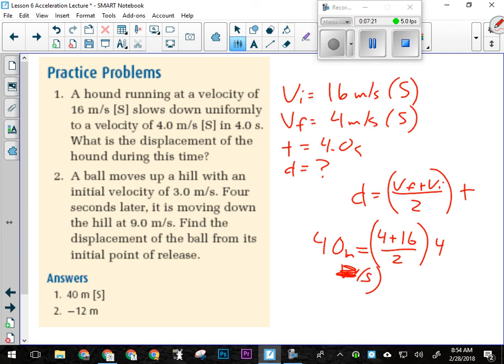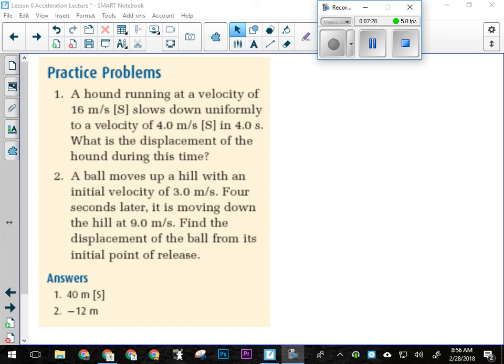Let's look at number 2. In number 2, vectors are important. Because in this question, the ball is initially moving up the hill, but later it's moving down the hill. So one of our velocities is positive and the other is negative. And if you don't reflect that in your math, you won't get the right answer. So in this question we have an initial velocity of positive 3.0 meters per second. Positive is going to be up the hill, negative down the hill. VF is going to be negative 9.0 meters per second. And we're trying to find the displacement of the ball from its point of release if this takes 4 seconds.